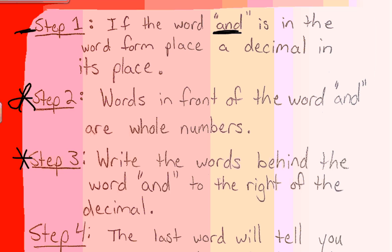Step number three. Write the words behind the word AND to the right of the decimal. So they're simply going to go to the right of the decimal place.